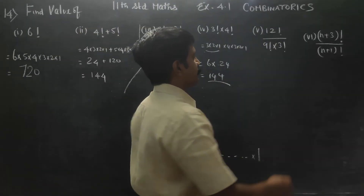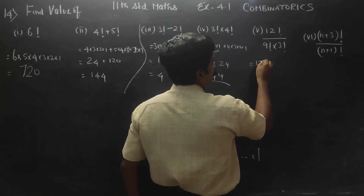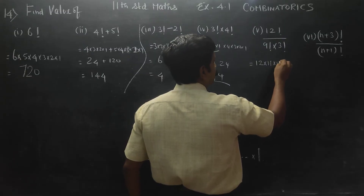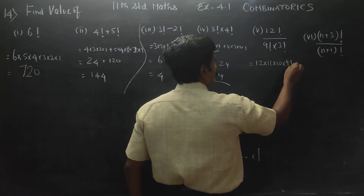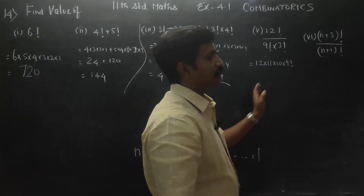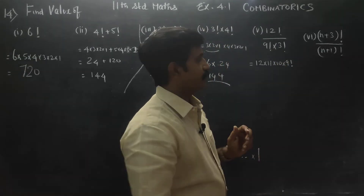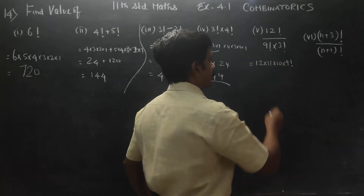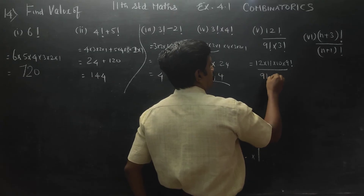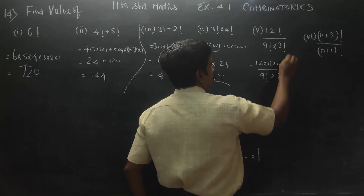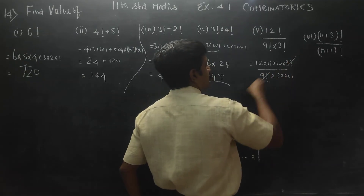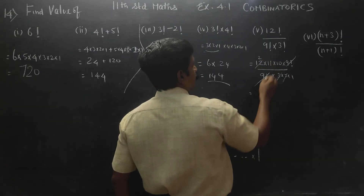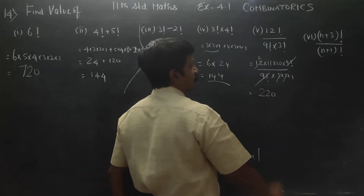This is 12 factorial by 9 factorial into 3 factorial. 12 factorial means 12 into 11 into 10 into 9 factorial — stop here. So we have 12 into 11 into 10 into 9 factorial, divided by 9 factorial into 3 factorial. Cancel 9 factorial. 3 factorial is 3 into 2 into 1. Cancel: 3 twos are 6, cancel further. The answer is 220.